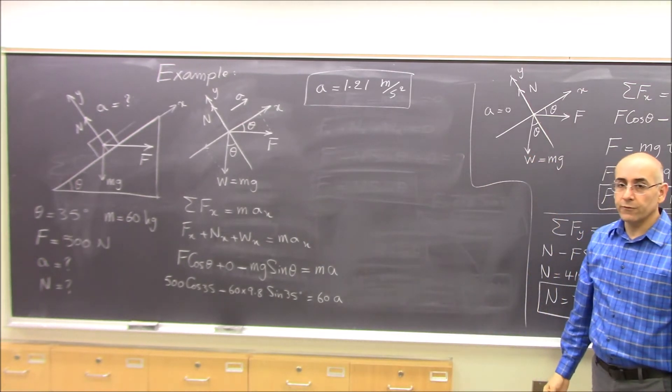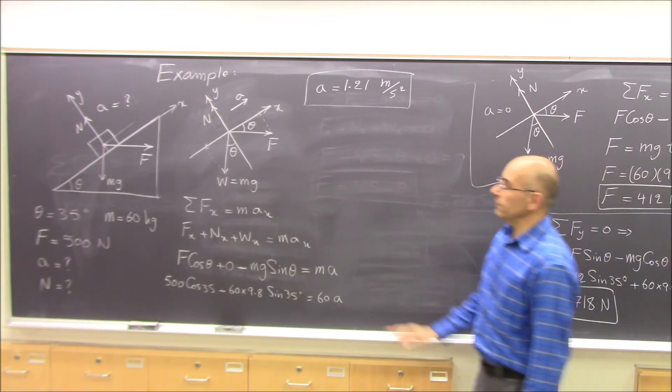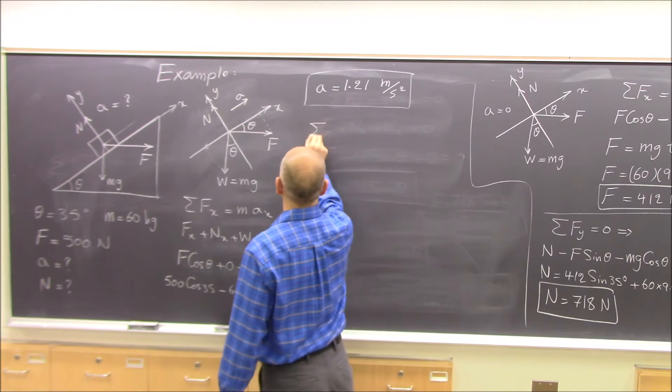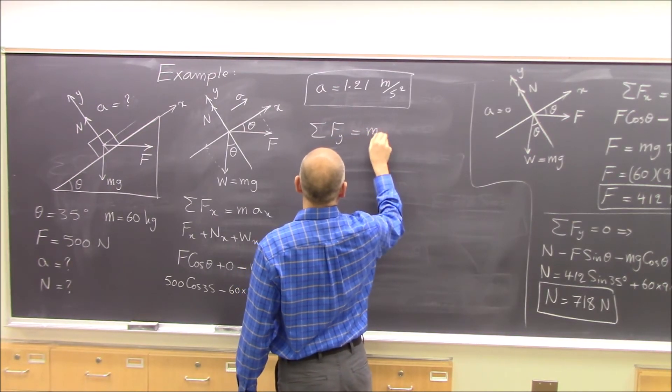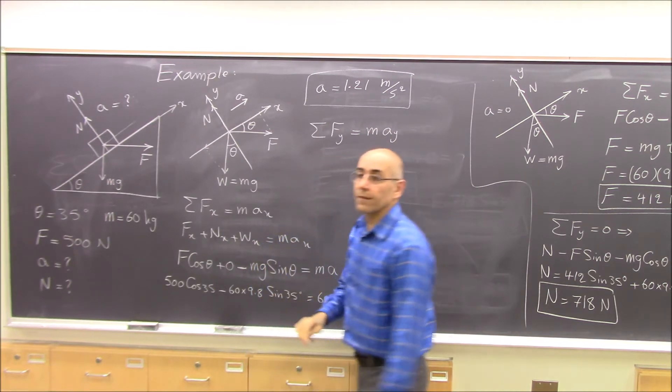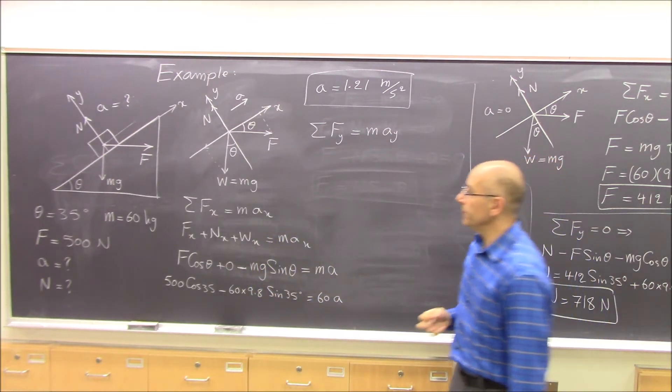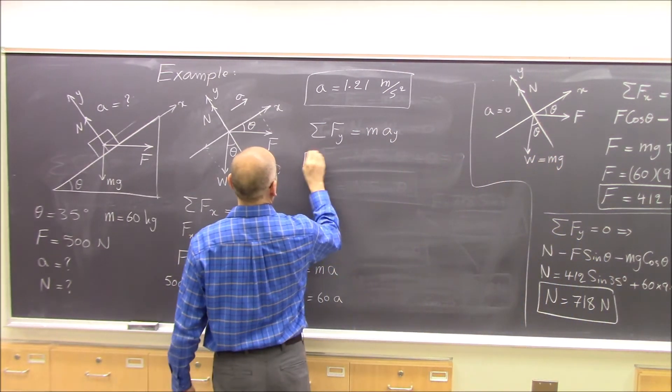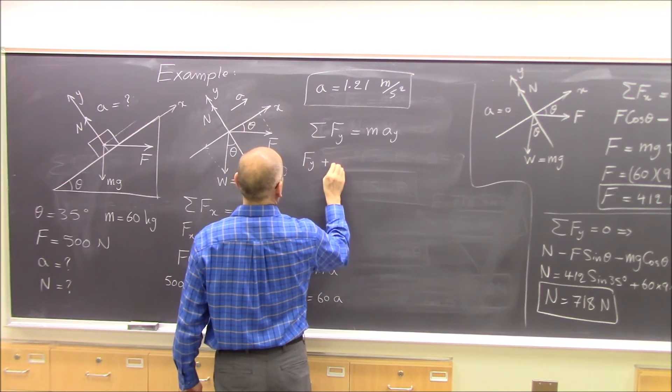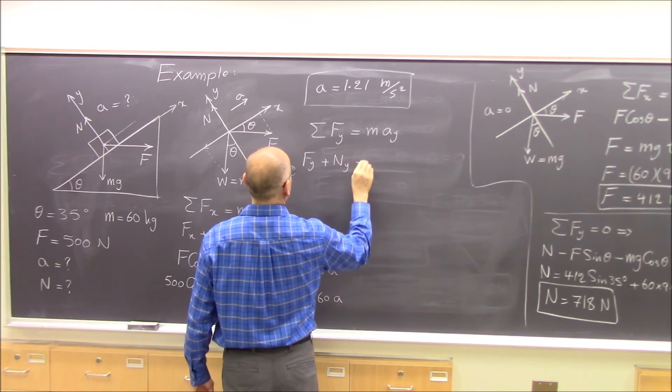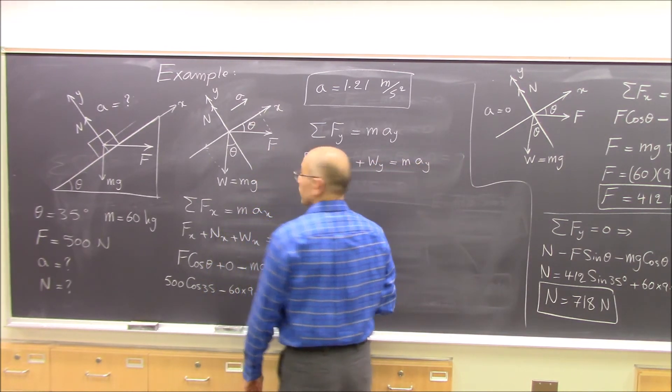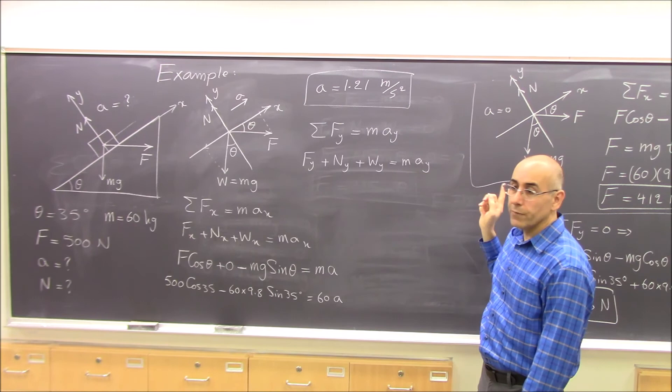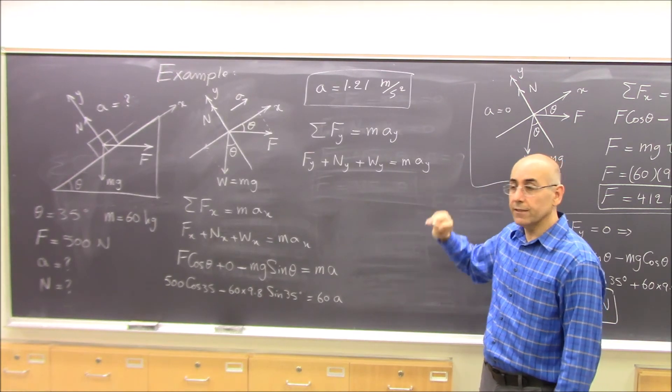Now I want to find the normal force. Normal force is in the y-direction, so sum of Fy will help me. Equal to may. What that tells me is Fy plus Ny plus Wy equals m times ay. Now I write each one of the components in terms of magnitude and direction.